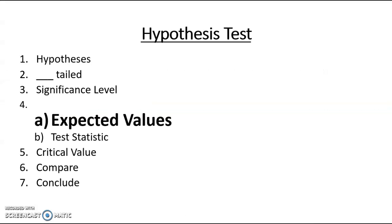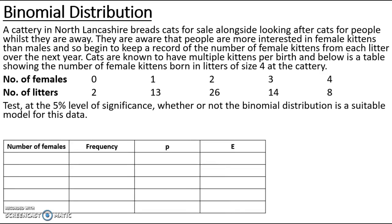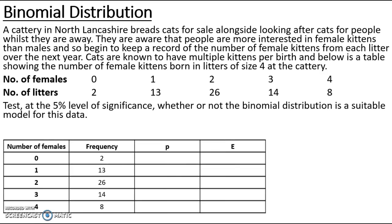Step 4: to get our test statistic we first need expected values. I'm rearranging the table to show number of females and frequency. To work out my expected values I need my probability of success. Normally in a goodness of fit question for binomial I would find my n and p values and use those to work out my probabilities. The difference with this question is that I do not have a parameter for p — I have not been told the probability of a kitten being female and therefore I have to estimate it.